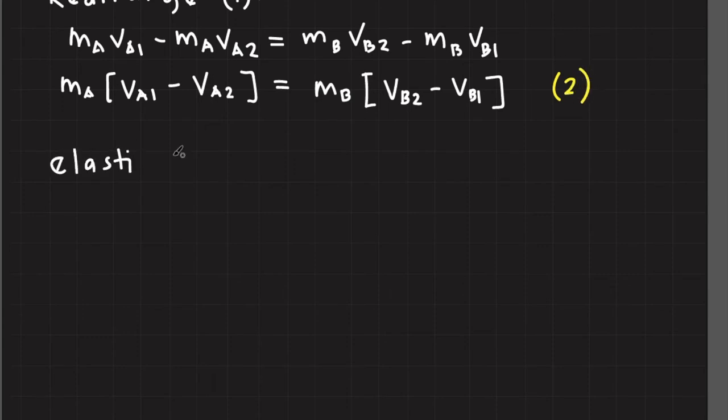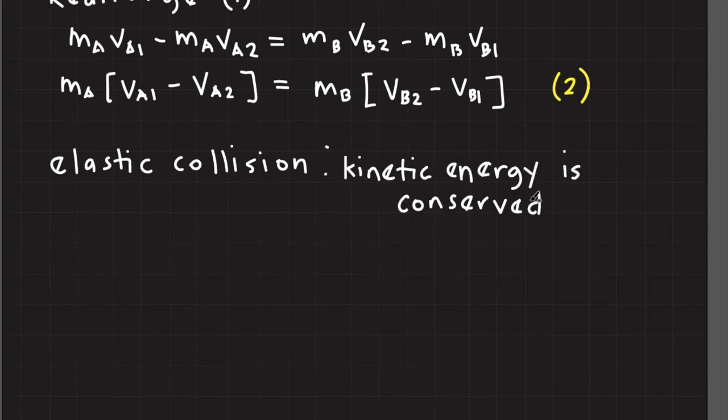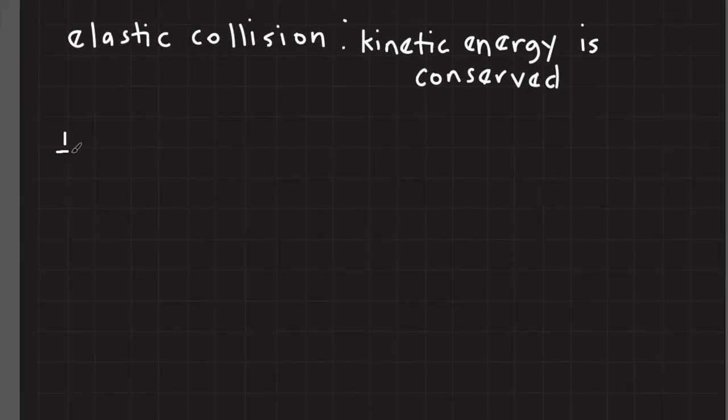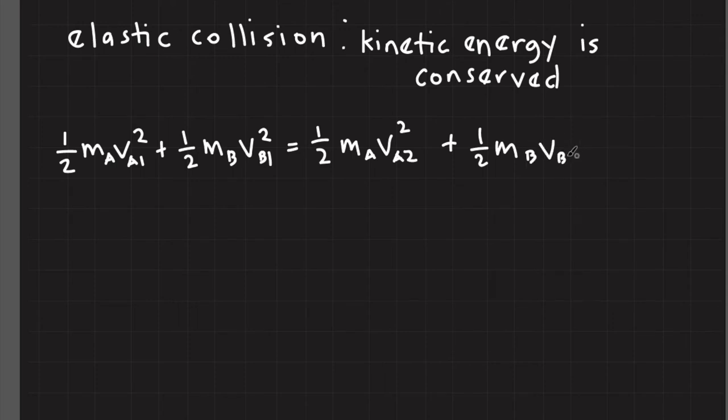Based on the given, the collision is perfectly elastic. When you have elastic collision, the kinetic energy is conserved. In other words, the initial total kinetic energy is equal to the final total kinetic energy. Let's multiply both sides of the equation with 2 to get rid of 1 half.